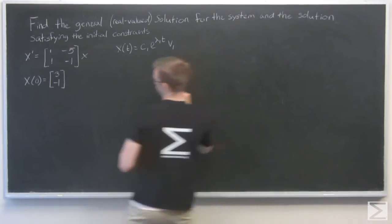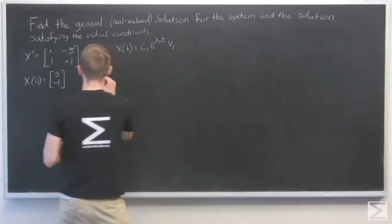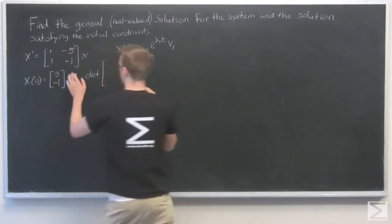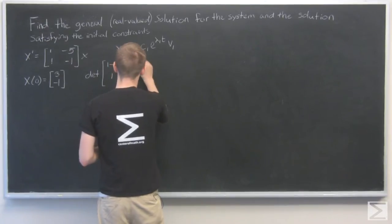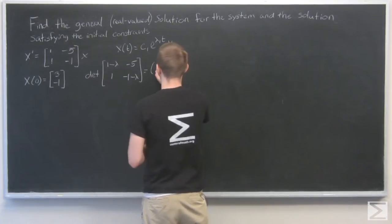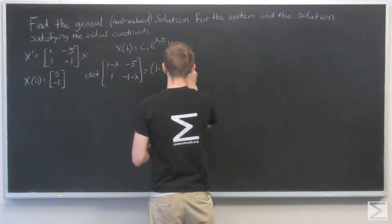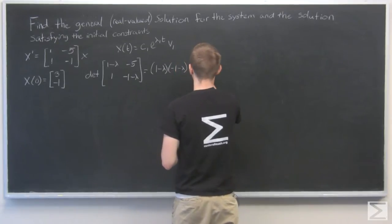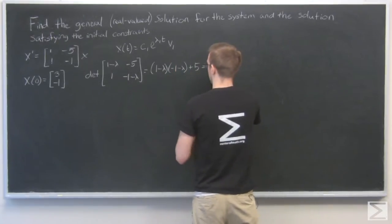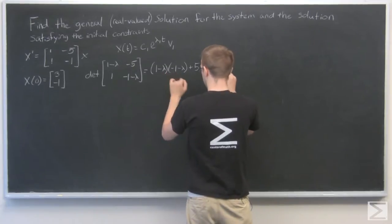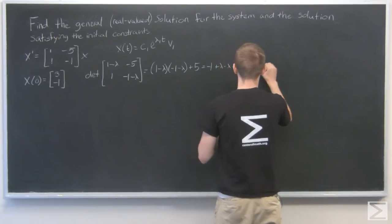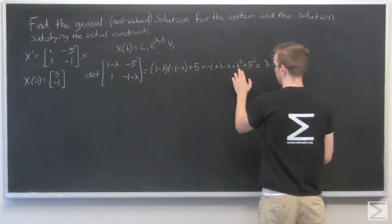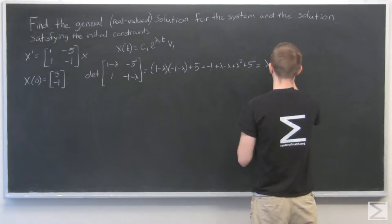So to find the eigenvalues, we take the determinant of this matrix minus lambda*I. And that is equal to (1-lambda)(-1-lambda) + 5, which equals -1 + lambda - lambda + lambda^2 + 5 equals lambda^2. Those cancel, and 5 minus 1 is 4, so plus 4.